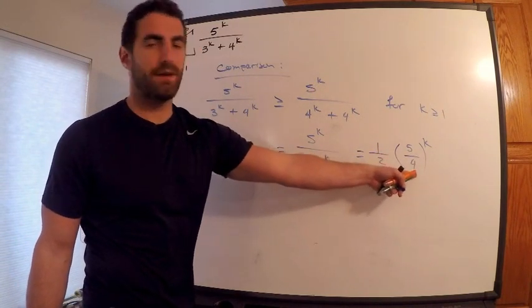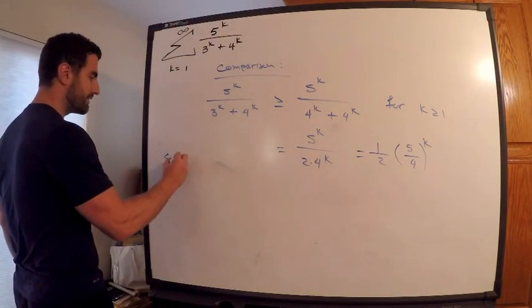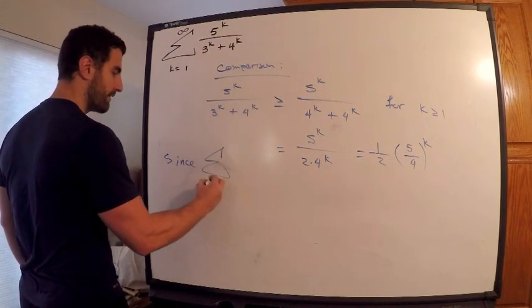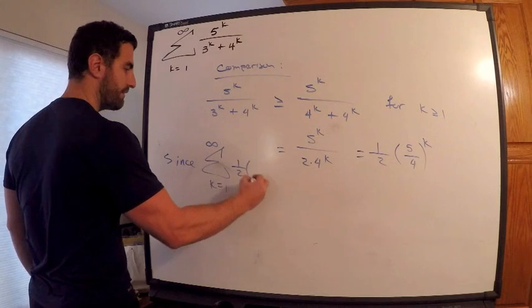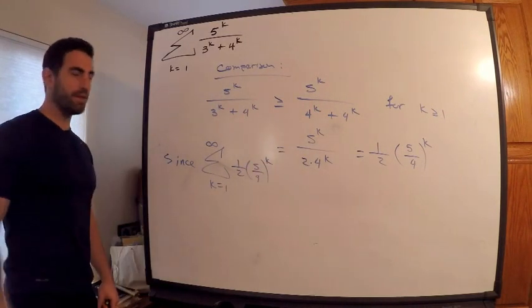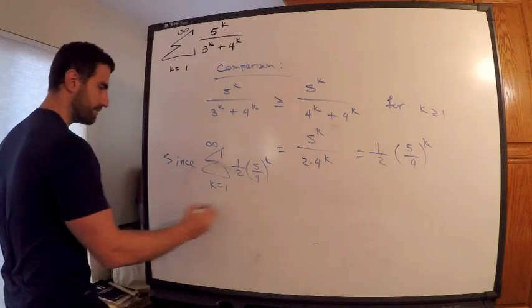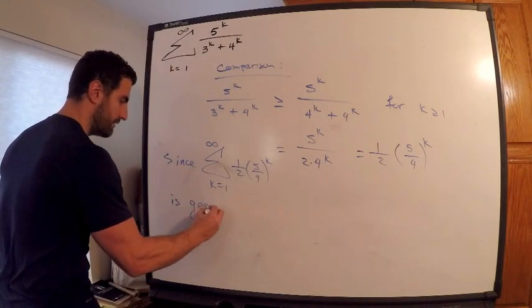So we know—since the sum from k equals 1 to infinity of one-half times (5/4)^k is geometric with common ratio equals 5/4...